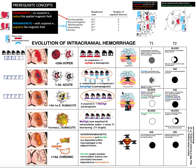Now let's look at the signal intensity on T1 and T2. We will focus first on the center of the circles and discuss the periphery of the hematoma later.